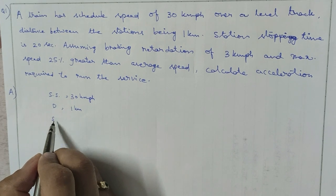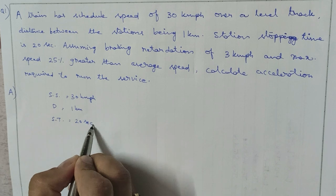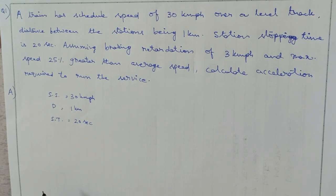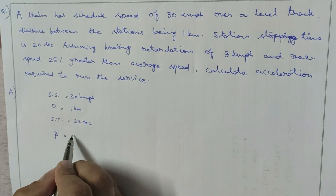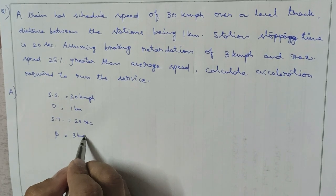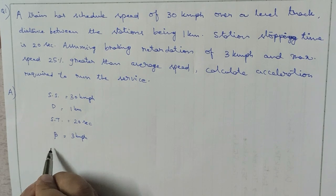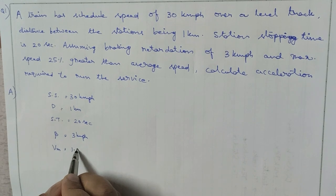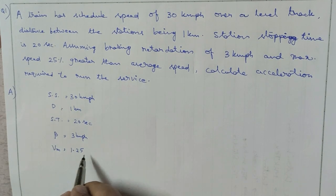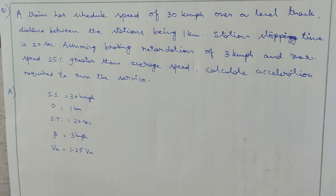The station stopping time is 20 seconds. The braking retardation β is 3 kmph/s, and the maximum speed Vm is 25 percent greater than the average speed, that is Vm = 1.25 × Va.